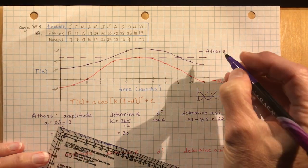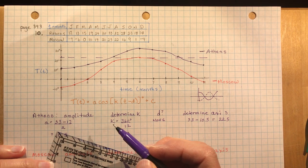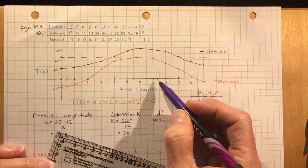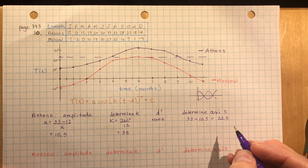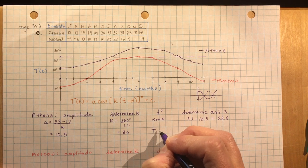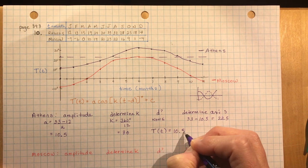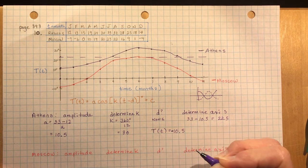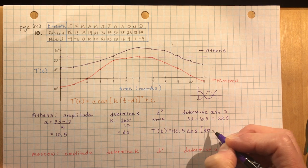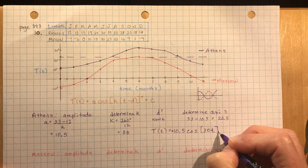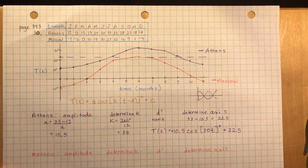In the next chapter you'll use these equations to find temperature at a specific time, like 7.5 months. For now, let's write the full equation for Athens: T(t) = −10.5·cos(30t°) + 22.5. The negative cosine captures the shape starting at the minimum in January, the amplitude is 10.5, k = 30, no shift, and the axis is at 22.5.